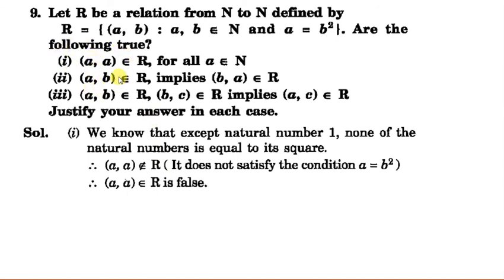Second one is: if (a,b) belongs to R, does it imply (b,a) belongs to R? This is also not true, because if a is b², then b is not a².